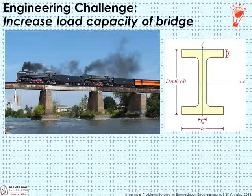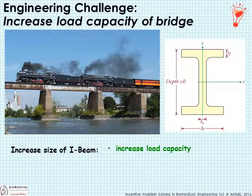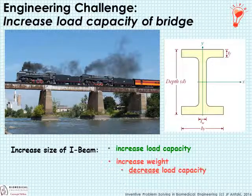Here's a design challenge. We have a bridge built out of I-beams, and we want to increase the load capacity. The trade-off is simply to use a larger beam — that would increase load capacity. But it's not an inventive activity; you can't write a patent for it because it's obvious. And we pay a price: increasing the size of the beam increases its weight, and the heavier the beam, the less the load capacity. So it's actually a vicious cycle.